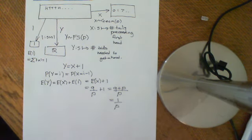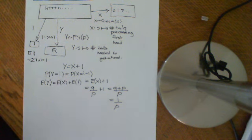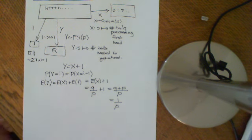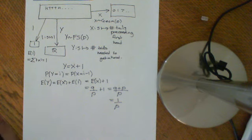So that is just a little introduction to the first success distribution, which is this other way of looking at the geometric distribution. Some people, when they say the geometric distribution, actually mean the first success distribution, or you could call it the first success geometric distribution.